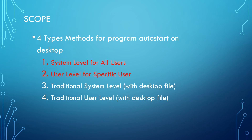There are four types of methods for program automatic execution on desktop. Only system level for all users and user level for specific user auto-start will be discussed in this video. Traditional system level and user level with desktop file will be discussed.